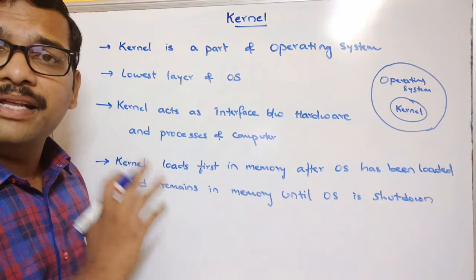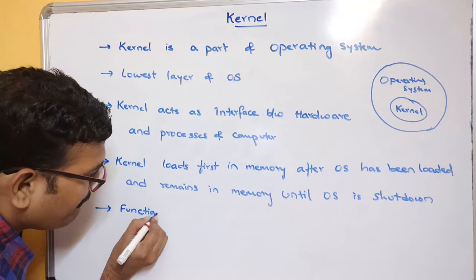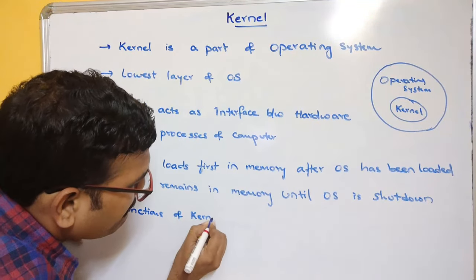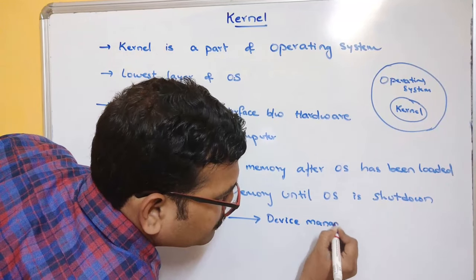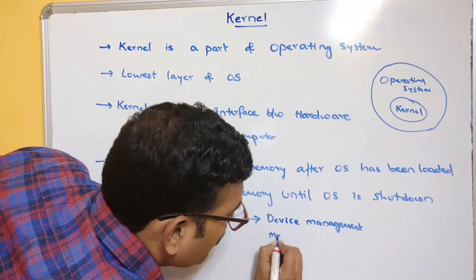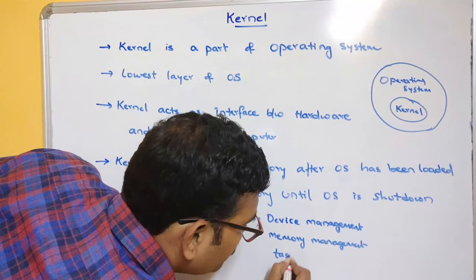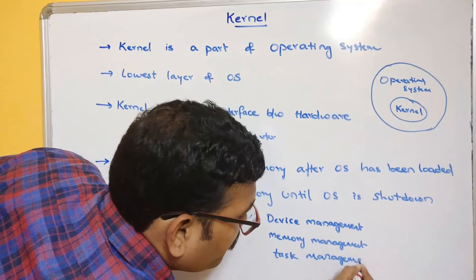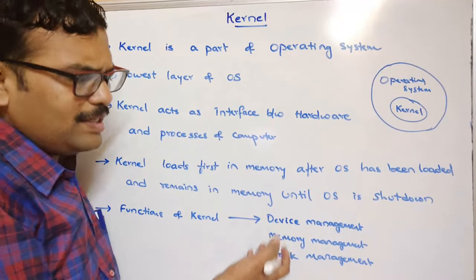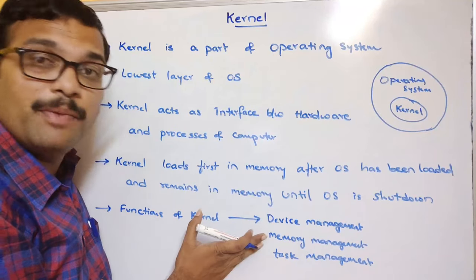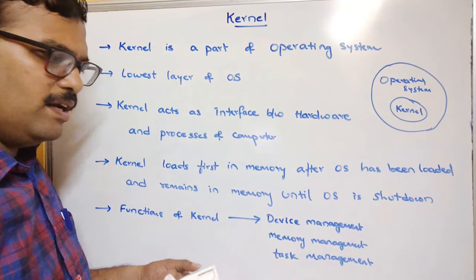So what are the functions provided by this kernel — what does the kernel actually do? The functions of a kernel include device management, allocating devices, memory management, and task management. These are all the different functions provided by the kernel itself. We have discussed device management, memory management, and task management in previous sessions.